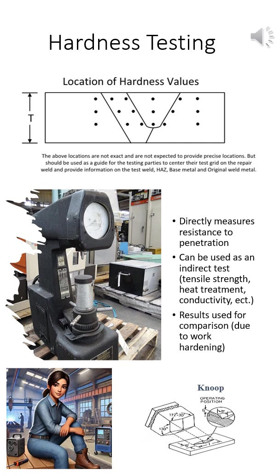Hardness versus tensile strength. This graph illustrates the relationship between hardness and tensile strength in carbon steels. In steel, hardness and tensile strength are directly correlated, meaning that as hardness increases, so does the material's ability to withstand pulling forces before breaking. This relationship is often considered linear, allowing us to estimate tensile strength based on measured hardness values using empirical equations.